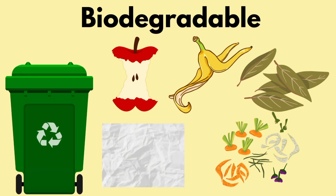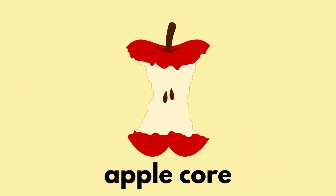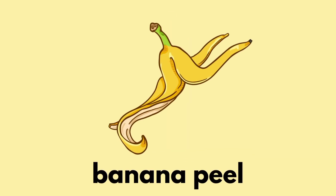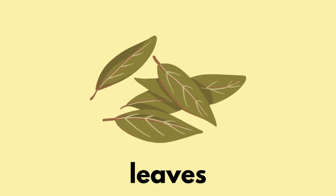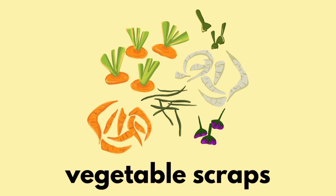And here are the examples of biodegradable objects: apple core, banana peel, leaves, paper, and vegetable scraps.